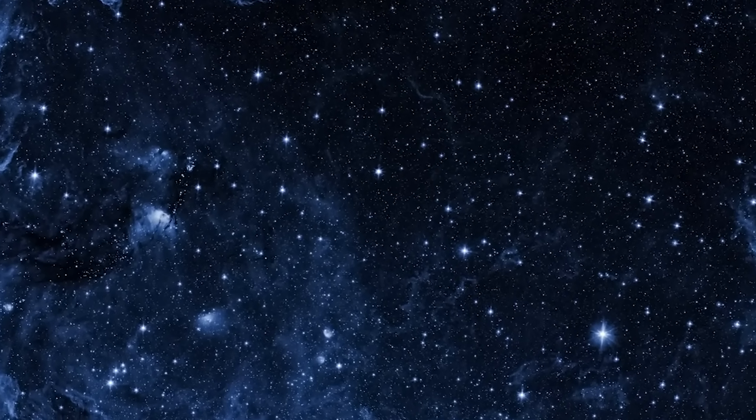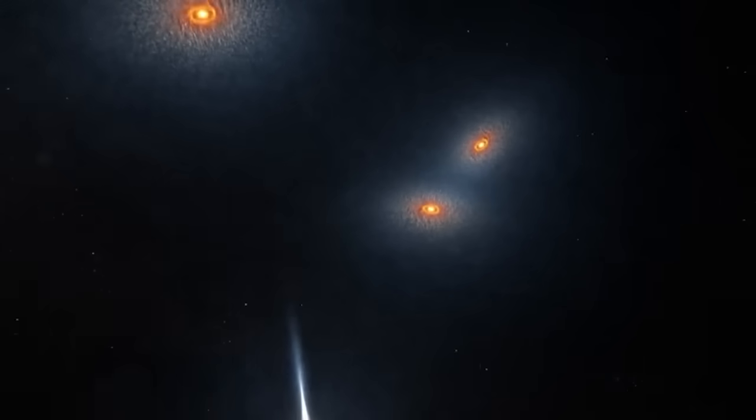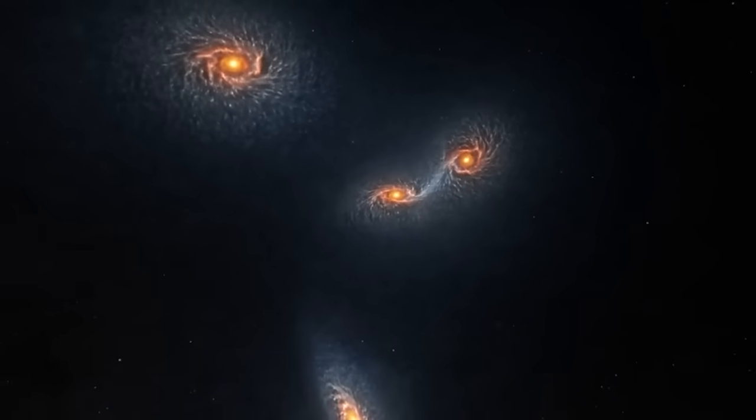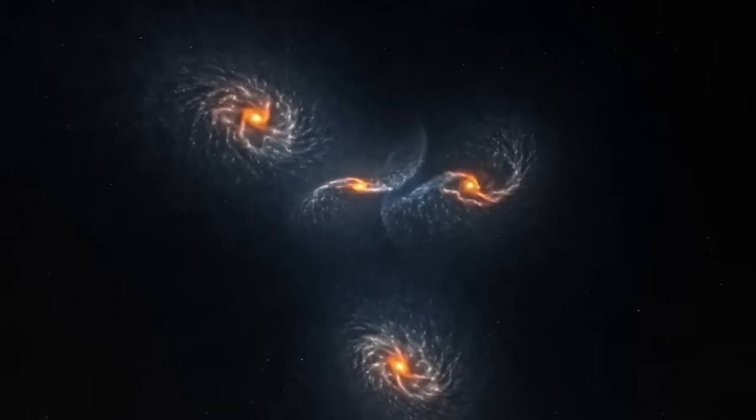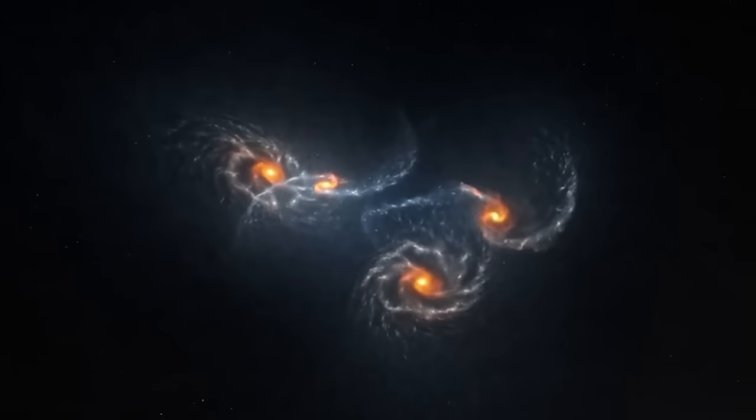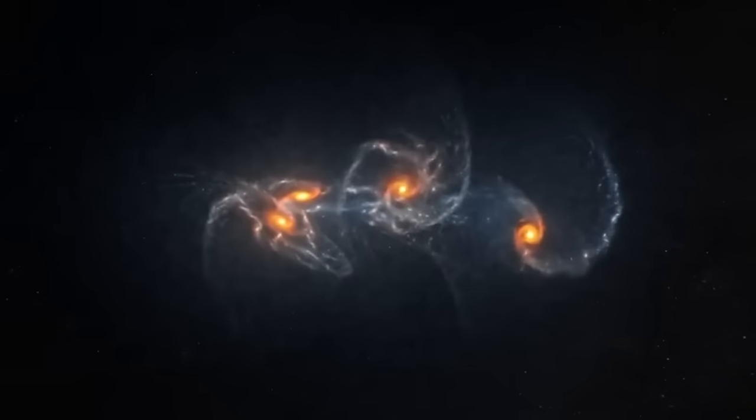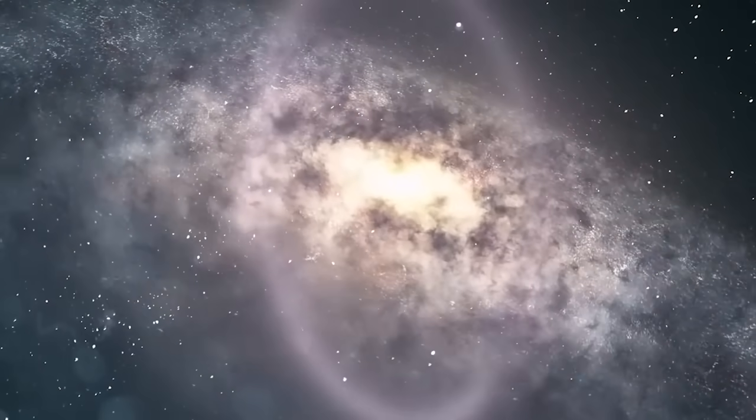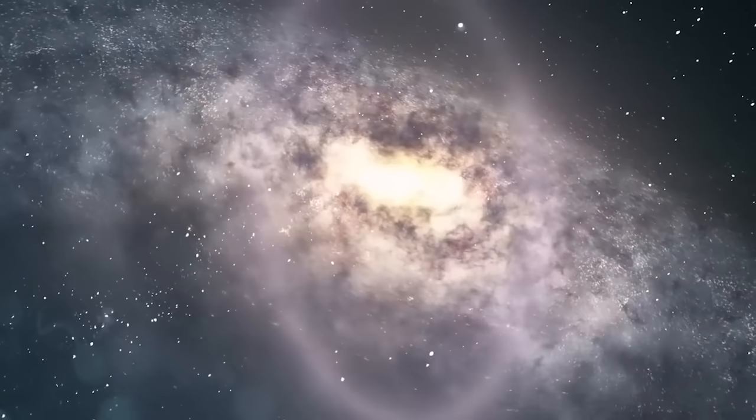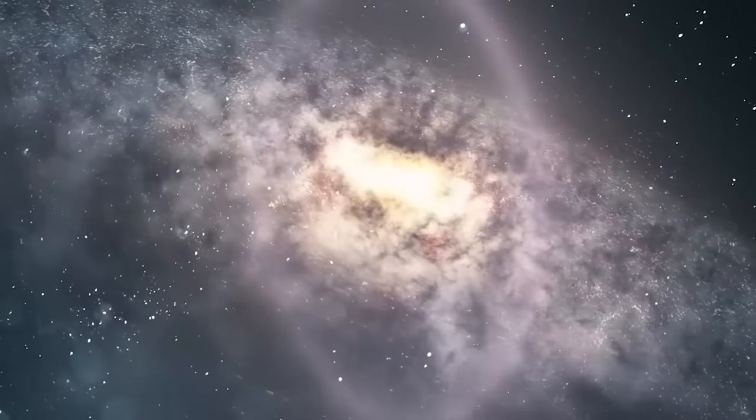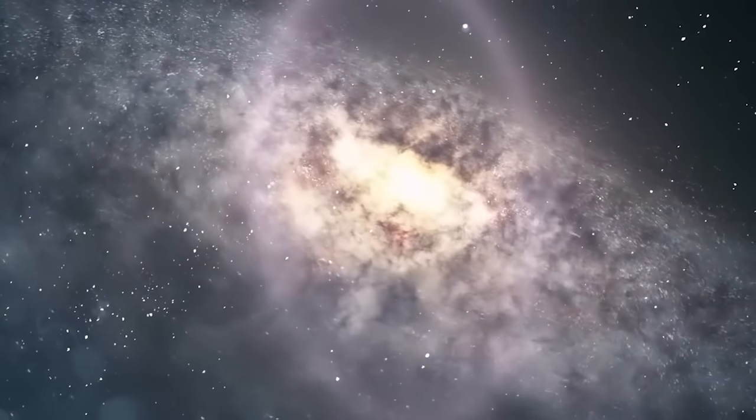Another surprise revealed by the James Webb. The ancient galaxies are not irregularly shaped galaxies, contrary to what Hubble's images suggested, but magnificent spiral galaxies like our own. Astronomers see this as an opportunity to better understand the formation of stars.